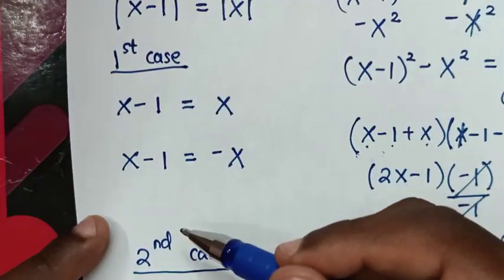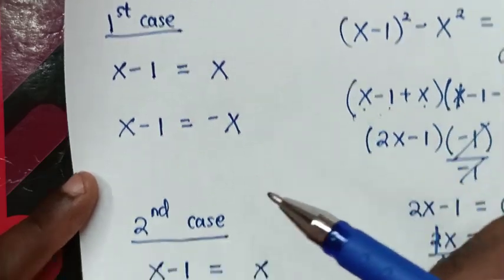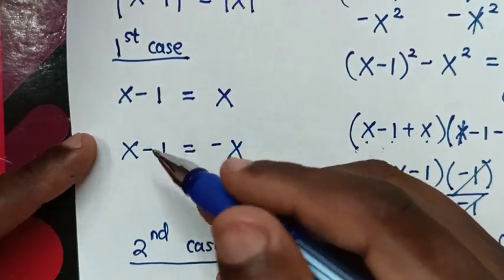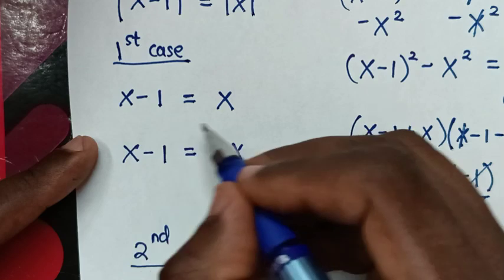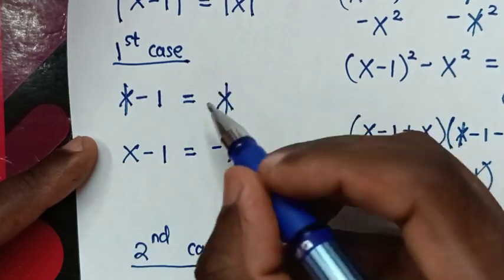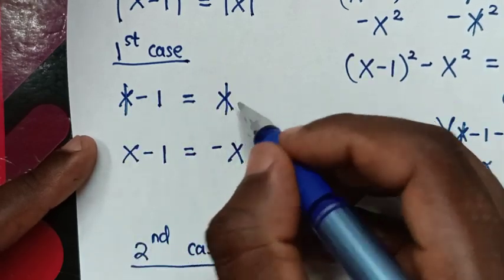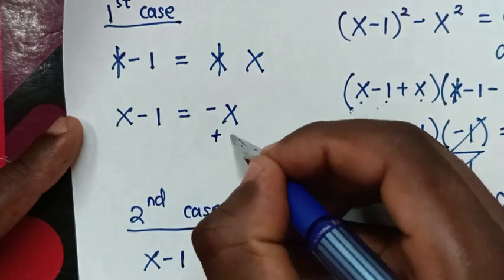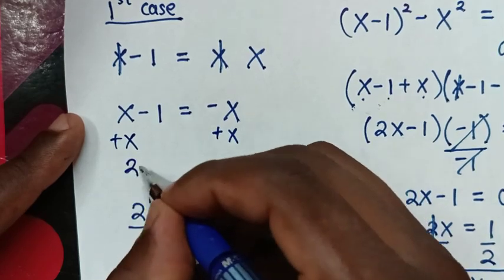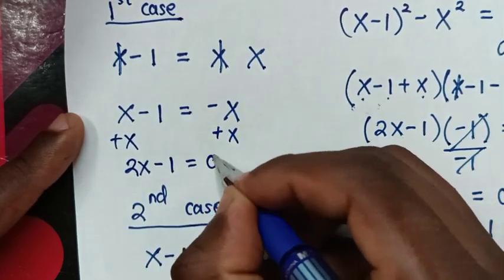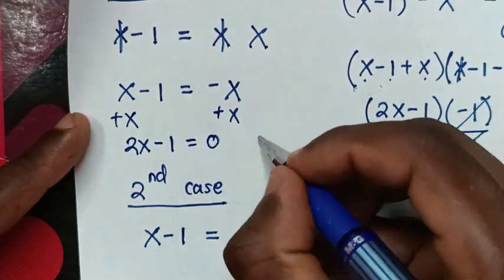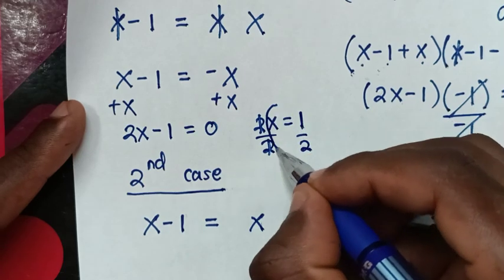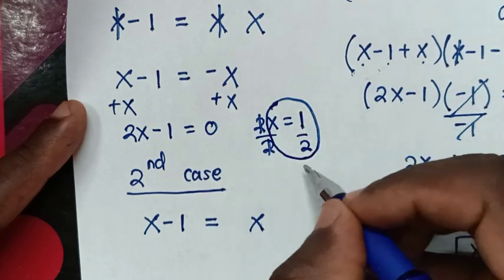From the first case solution x minus 1 equals x: subtracting x from both sides, this and this cancel, leaving negative 1 — we can't find the value of x, so this solution is rejected. From the other solution x minus 1 equals negative x: adding x to both sides gives 2x minus 1 equals 0. Taking negative 1 to the right gives 2x equals 1, and dividing by 2 gives x equals one half. We get the correct answer from the first case.